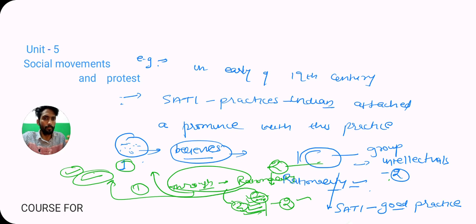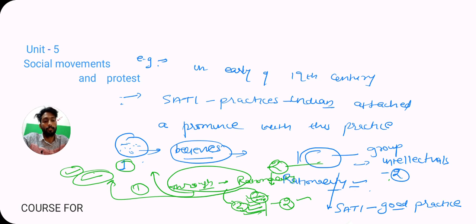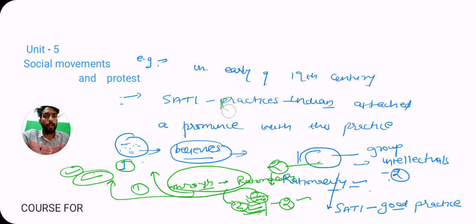Group two went into society and tried to influence group one using a rationality model. They cited the sati practice as detrimental for society. Group two interacted with group one, trying to connect more and more people with the movement so they could influence people's thinking, bring more people into the movement, and shape a better society — making the change happen. This is what we call a social movement. Raja Ram Mohan Roy was the pioneer and leader, interacting with individuals, organizations, and social groups, trying to influence their thinking and notions, conveying that sati is a practice not to carry on — it is very detrimental for the society.